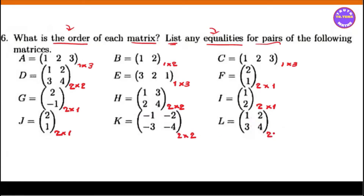Row two, column two. That's what we have to do. We have to do the same thing. E, C, order to do. Entry 1, 2, 3 and 1, 2, 3, then entry to do.